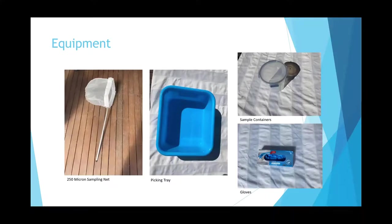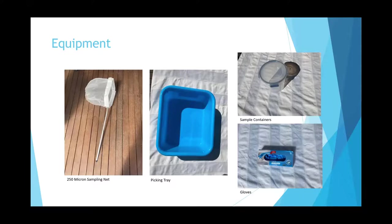Firstly we have the 250 micron sampling net used to collect each of the samples. This blue container here is the tray used as a picking tray — we put the samples in and pulled the invertebrates out for identification. The sample container in the corner is what was used to take samples off-site. We also have gloves for handling the invertebrates and for general hygiene. For identifying each of the invertebrates we used the WaterWatch sampling guide as well as the WaterBug app.